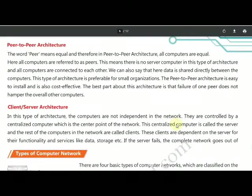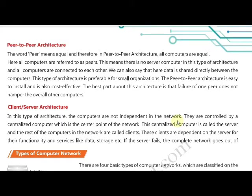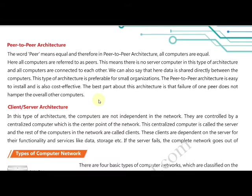Peer-to-peer architecture is easy to install and inexpensive compared to client-server architecture because it requires only client machines to connect themselves — you don't need to install any highly configured machine. Whatever services exist on client or normal computers are shared with other computers. Whenever any particular client collapses, it will not affect the entire network; your entire network will work without any disturbance.